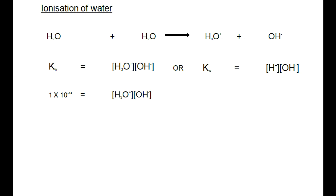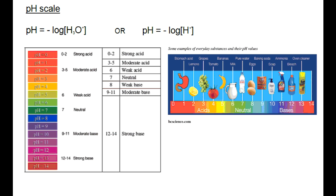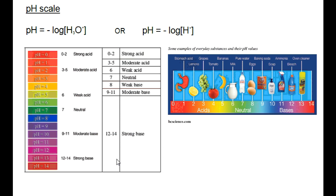We will now discuss the pH scale. The important equation is: pH = -log[H3O+], also written as pH = -log[H+]. As mentioned earlier, whether you write [H3O+] or [H+], they refer to the same thing.